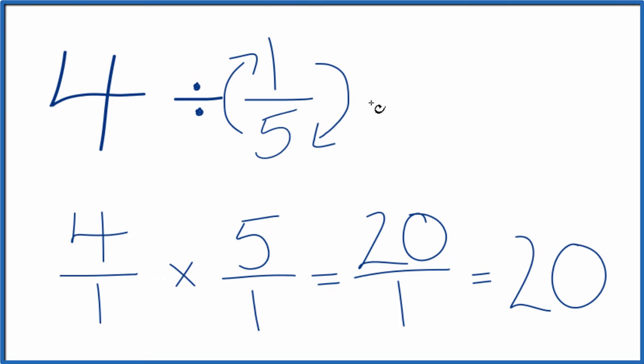So in answer to our question, 4 divided by 1 fifth, that equals 20. If you were to multiply 20 times 1 fifth, you get 4.